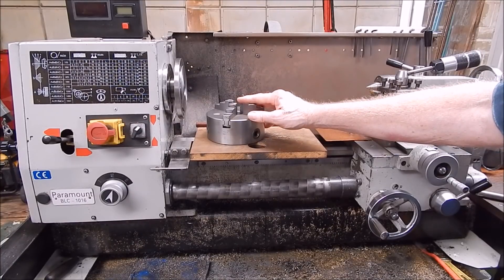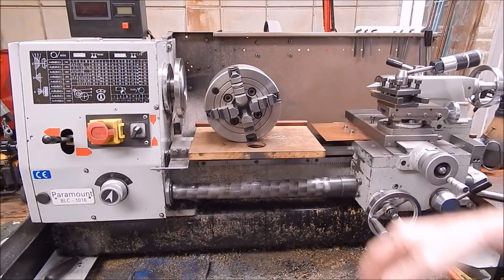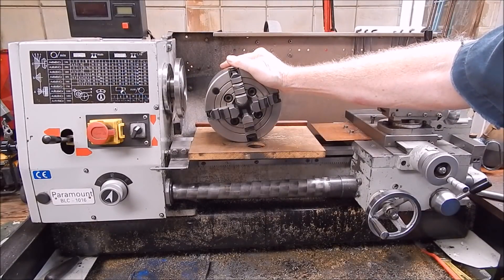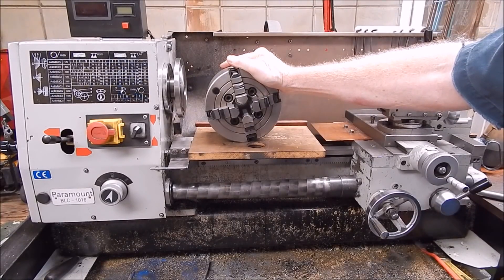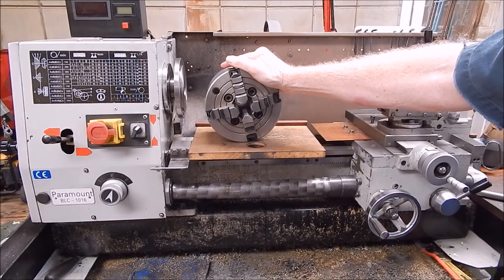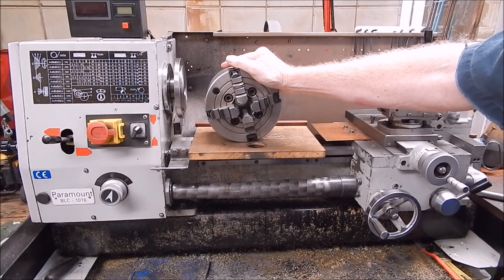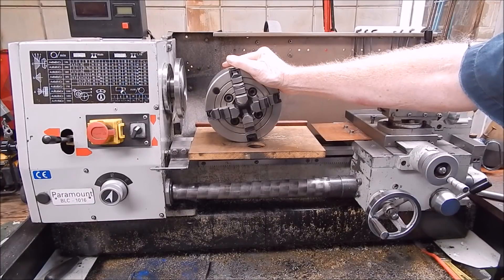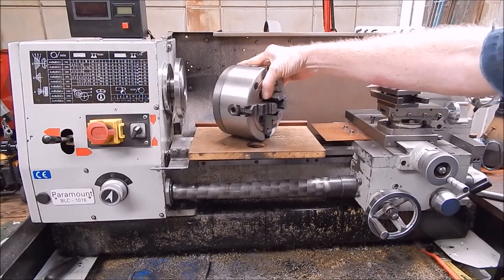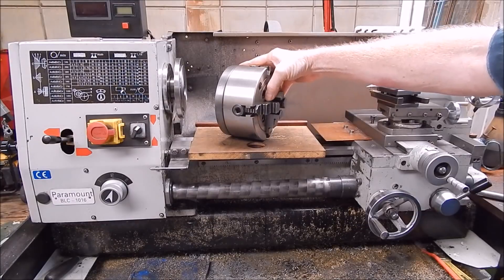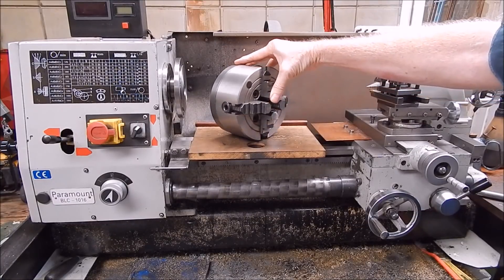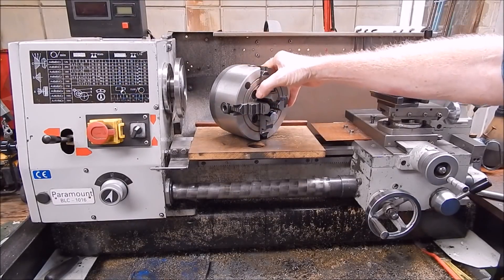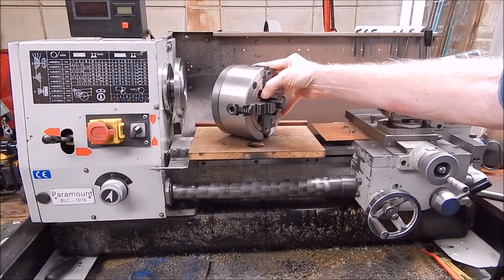But what if you've got a four-jaw chuck like one of these? I mean, you are the man. You've got the lathe, and now you've got the four-jaw chuck. You've got to be the coolest dude in the whole bloody neighbourhood. But then, of course, to use this, you've got to set it up. You've got to put your stock in there, and then you've got to adjust everything so it's nice and symmetrical. How do you do it?